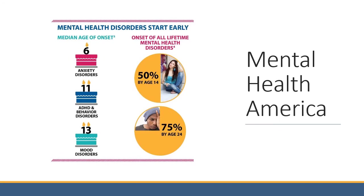I'd be remiss if I didn't talk about why kids need therapy. Some of these numbers were pretty staggering. The median age of onset for anxiety disorders is six — and anxiety in kids doesn't always look like nervousness; sometimes it can be explosive and outward. ADHD and behavior disorders have a median onset of 11, mood disorders 13. 50% of all lifetime mental health disorders have onset by age 14, 75% by age 24. Research has also shown that the school counselor is often the only counselor kids will ever see.